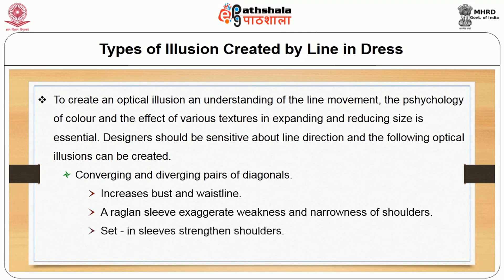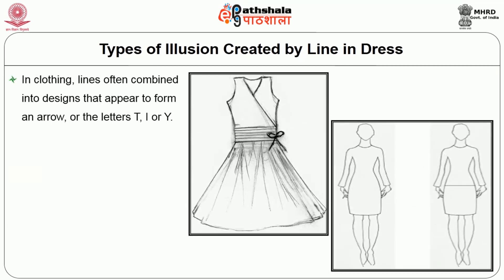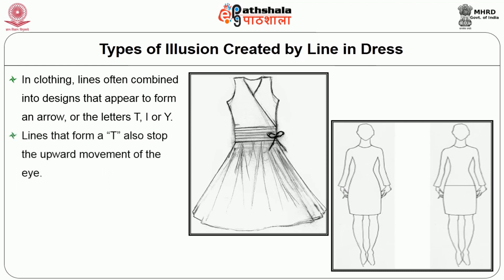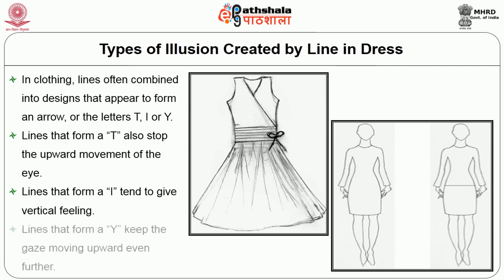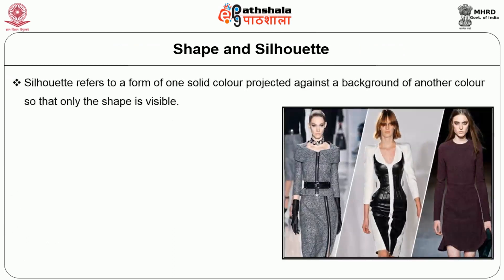Satin sleeves strengthen the shoulders. In clothing, lines often combined into designs that appear to form an arrow or the letters T, I or Y. Lines that form T also stop the upward movement of the eye. Lines that form the letter I tend to give a vertical feeling. Lines that form the letter Y keep the gaze moving upward even further.